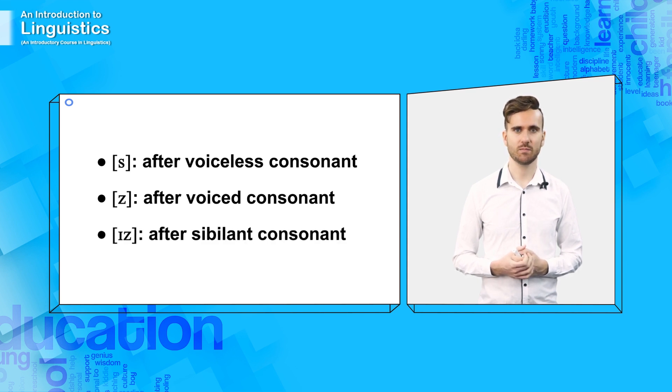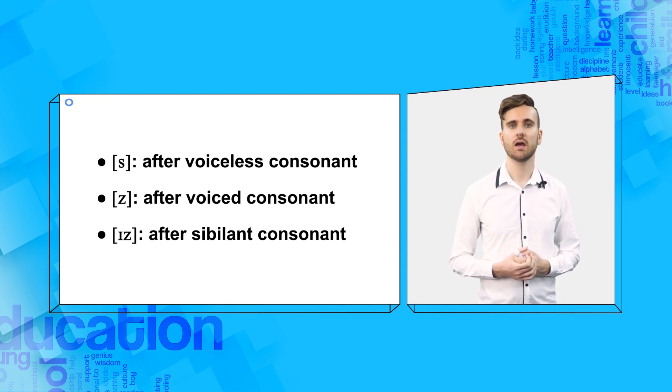[ɪz] is simply used because it is very difficult to say [s] or [z] directly after a sibilant. So, English inserts a vowel between the last sound of the noun and the plural marker because you cannot easily say a sibilant, namely the plural, after a sibilant, namely the last sound of the noun.